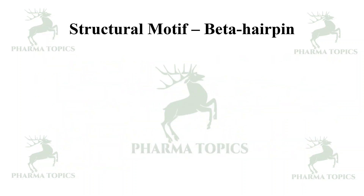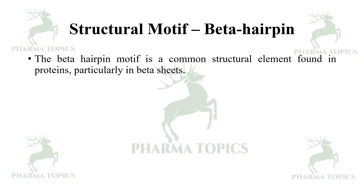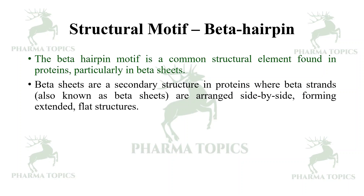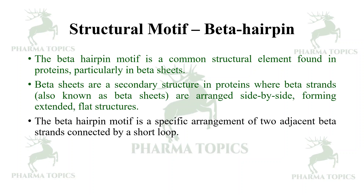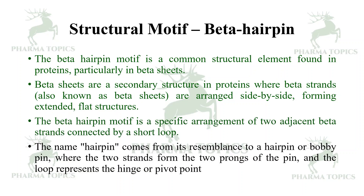Next is the beta hairpin motif, a common structural element found in proteins — particularly in beta sheets. Beta sheets are secondary structures where beta strands are arranged side by side, forming extended flat structures. The beta hairpin motif is a short, specific arrangement of two adjacent strands connected by a short loop. The name 'hairpin' comes from its resemblance to a hairpin or bobby pin, where the two strands form the two prongs and the loop represents the hinge.